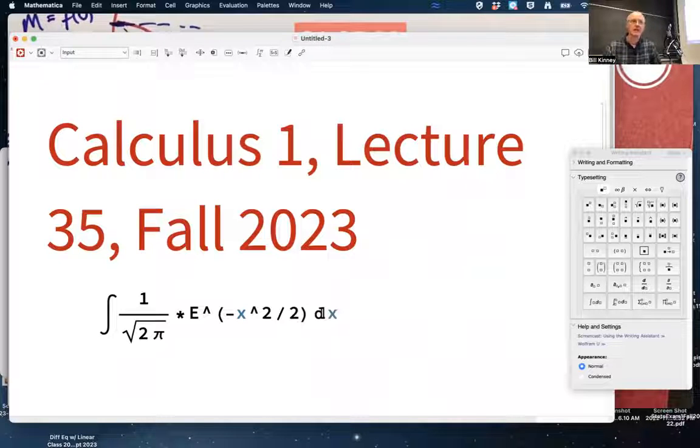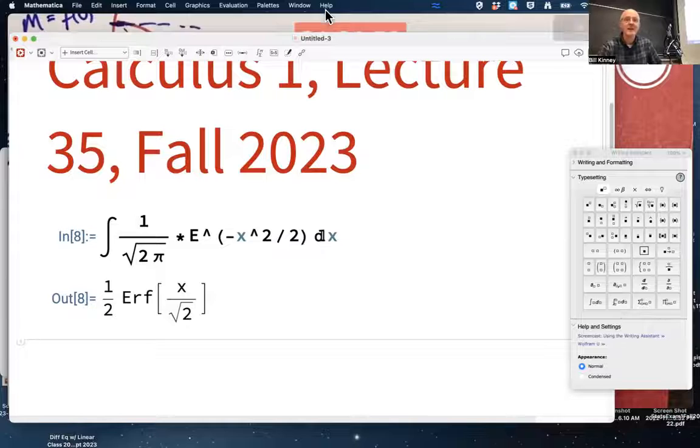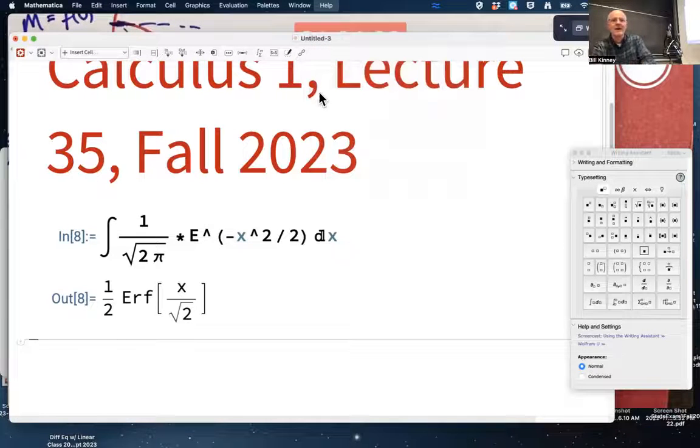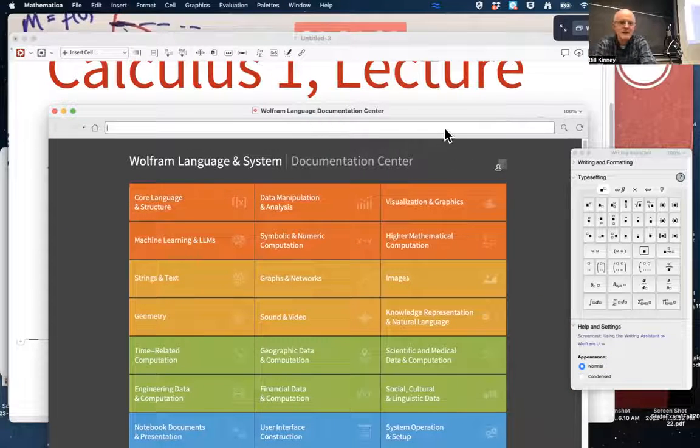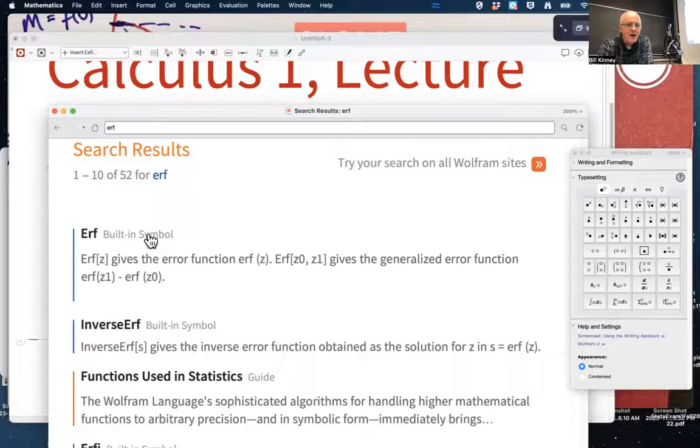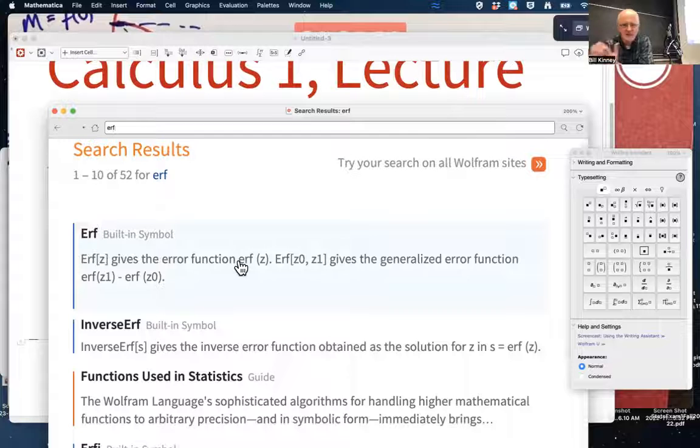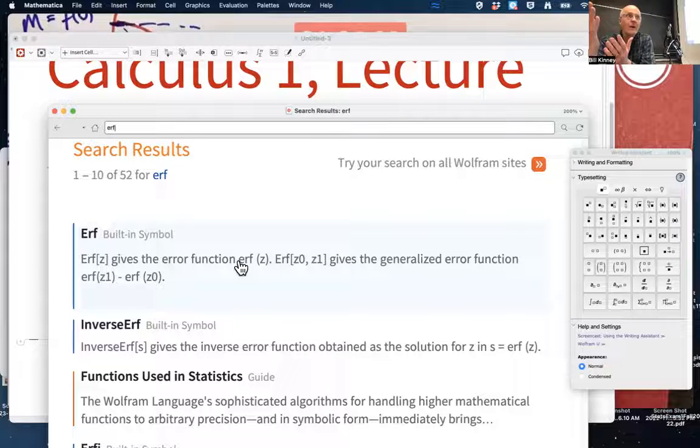An antiderivative does exist, but it's just a function you never heard of before. That one. 1 half erf of x over square root of 2. Erf? What's that? Mathematica. Help. What is erf? Just type it in here. Erf. Erf z gives the error function. Well, what's that? Okay, so erf stands for error function.